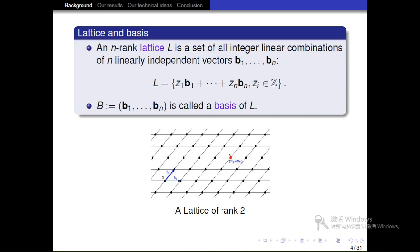Now, let us recall definitions of lattice and basis. An n-rank lattice L is the set of all integer linear combinations of n linearly independent vectors b1 to bn. The matrix B equal to b1 to bn is called a basis of L. If the rank n is greater than 2, then lattice L has infinitely many bases.